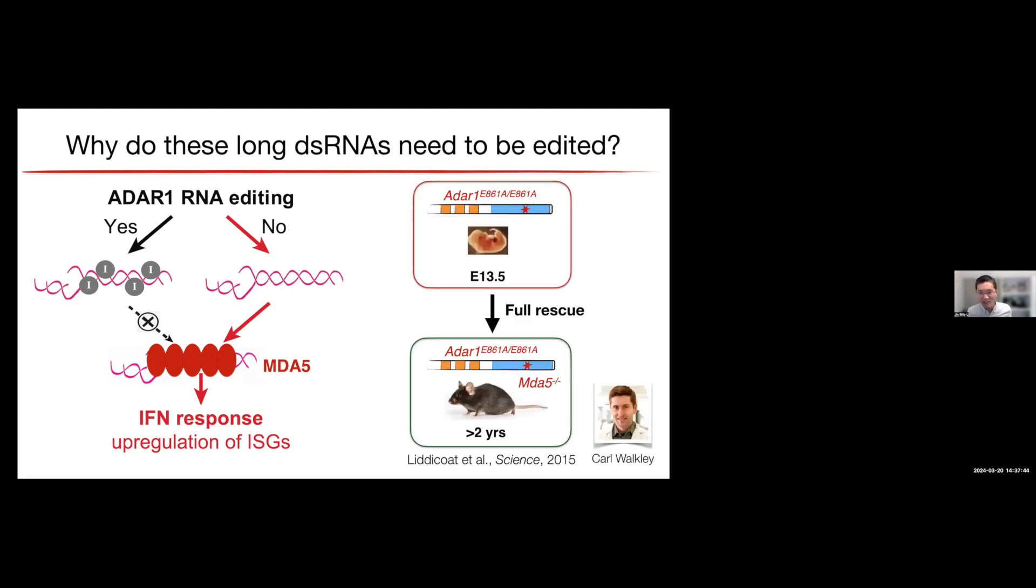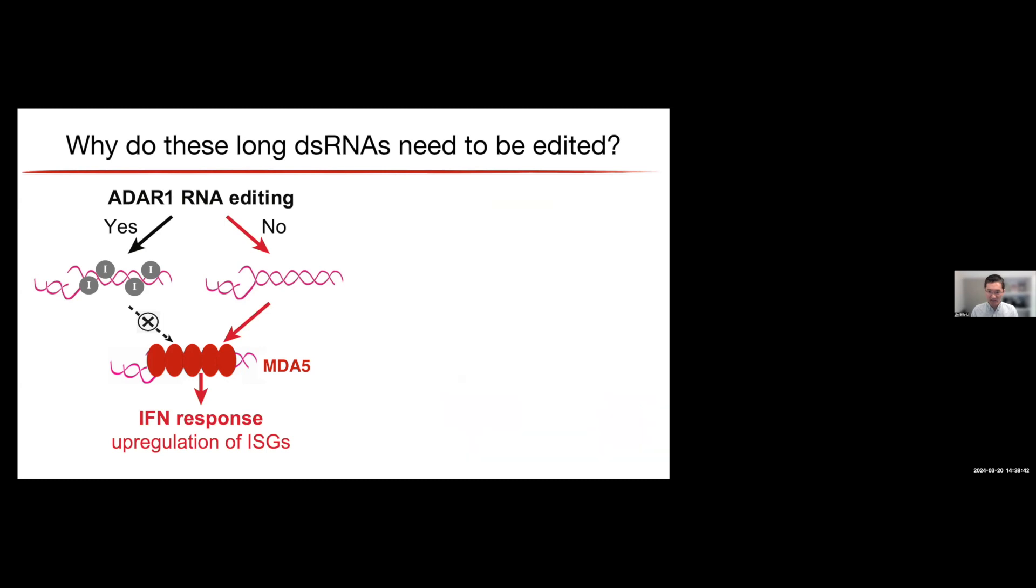All right. So the key data, let me just show you one maybe key data, is that many years ago, we collaborated with Carl Walkley's group in Australia. What we did first was to make a mouse without editing by ADAR1. So just changing a single amino acid that is critical for the editing activity, then the mouse would die before birth. Strikingly, if you remove MDA5, the double-strand sensor, the mouse can live like a normal lifespan. So that really says that cellular long double strands without being edited will only activate MDA5. By the way, we and others also try to rescue the ADAR1 mice with many other sensors. None of the other things can have a good rescue at all. Pretty much only MDA5 can rescue, but not just rescue to adulthood, it's also rescued to a full lifespan. That is pretty striking result. That's the reason that led to the mechanism I list on the left.